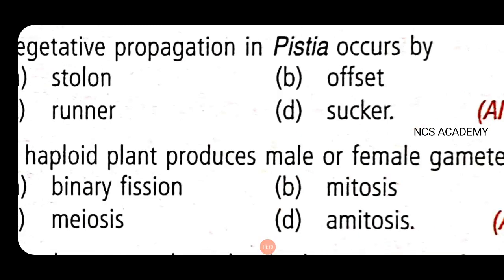Next question, AMU example: Haploid plant produces male or female gametes by mitosis. As in mitosis, the chromosomal number remains same. Meiosis is not possible because in meiosis chromosome number reduces to half. And in haploid plant, chromosome number in gametes will not be visible. So the right answer is mitosis.